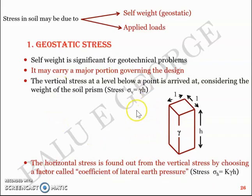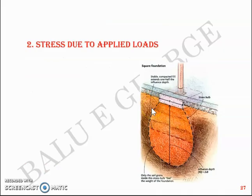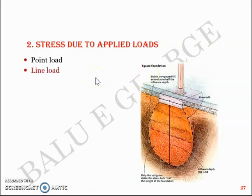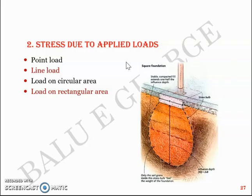That was about geostatic stress, where the only load in the system is self-weight — unit weight gamma multiplied by volume. In the second load condition, the load is applied not by self-weight but from an external source — for example, a point load, a line load, a load on a circular area, a rectangular area, or even an irregular geometry.